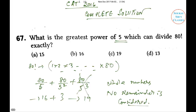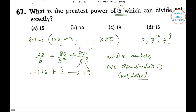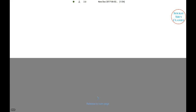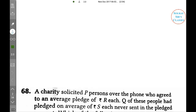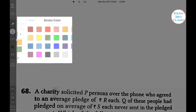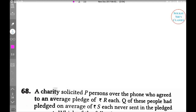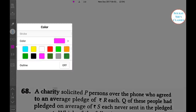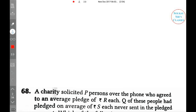So the answer is 16 + 3 = 19. This is the way to find the greatest power of any prime in a factorial — if they had given 7, we would have done it with 7, 7², 7³, and so on. Now let's do the second question. I'll use a different color — let's use red for this one.